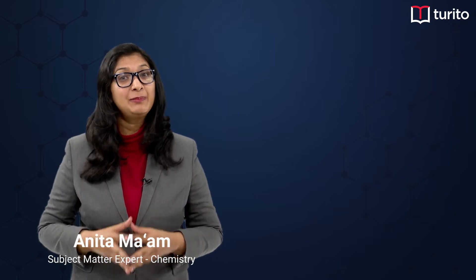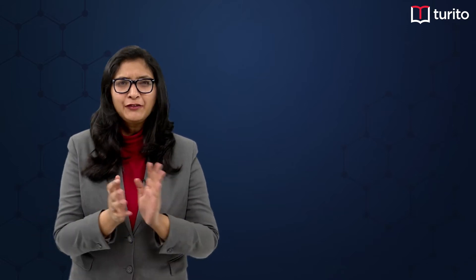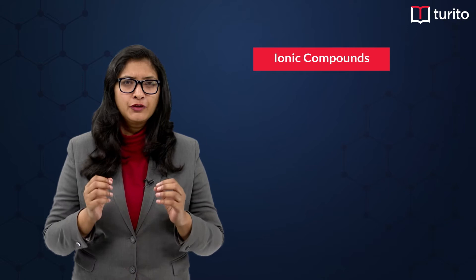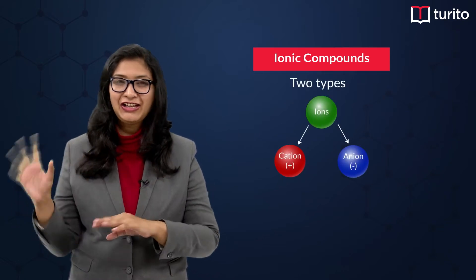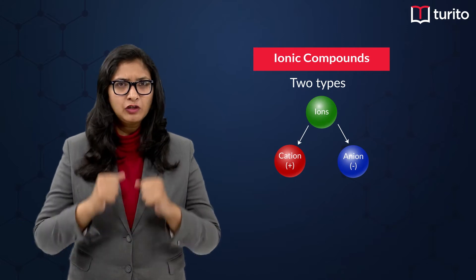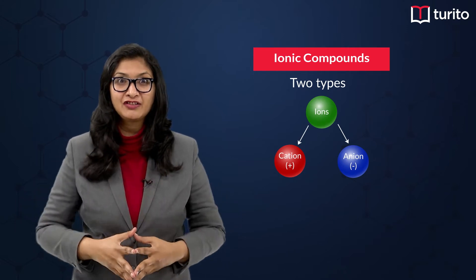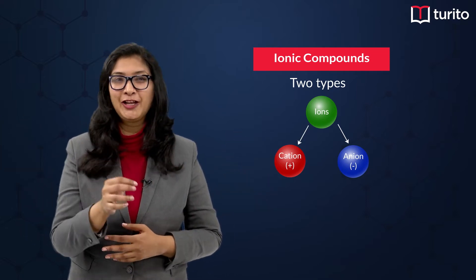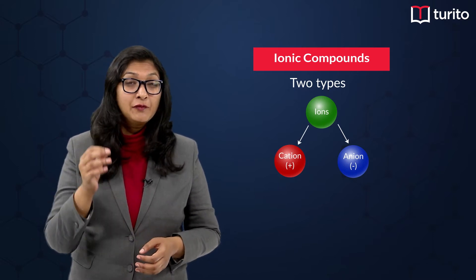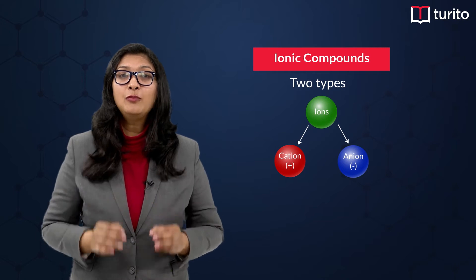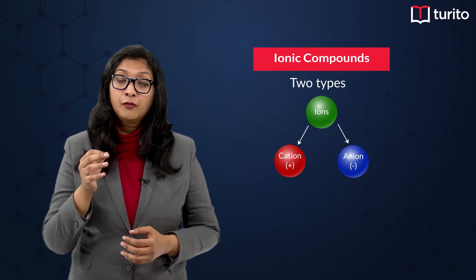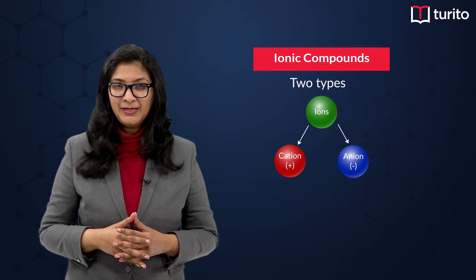Hello students, we are talking about science — specifically chemistry. As you already know, ions are charged particles: there is positive charge as well as negative charge. When opposite charges are present, they combine together to form an ionic compound. In this module, we will see how to write the formula of ionic compounds.